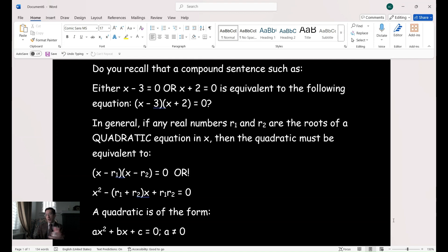We got to talk about compound sentences in relation to our topic on quadratics today. Now you recall, and I've pre-typed this, you recall when we have a compound sentence, you have either-or. Let's say either x minus 3 equals zero, or x plus 2 equals zero. And that is equivalent to the following: you can rewrite that as x minus 3 times x plus 2 equals zero. So in general, if any real numbers, very important the set of numbers you're working with, we'll call them r₁ and r₂, are the roots of a quadratic equation in x, then the quadratic must be equivalent to the following that you see here.